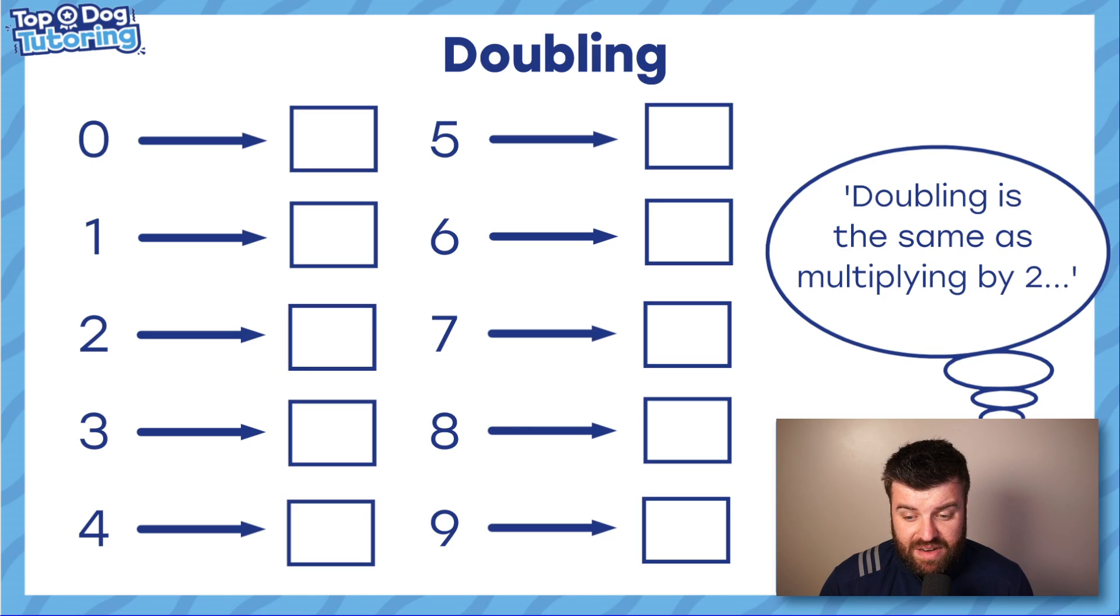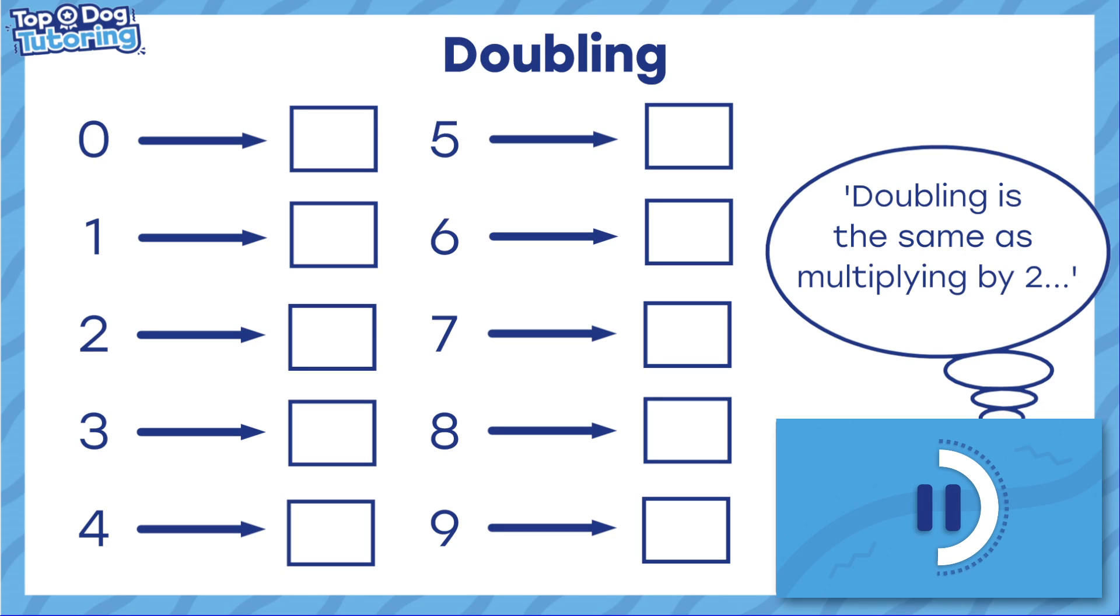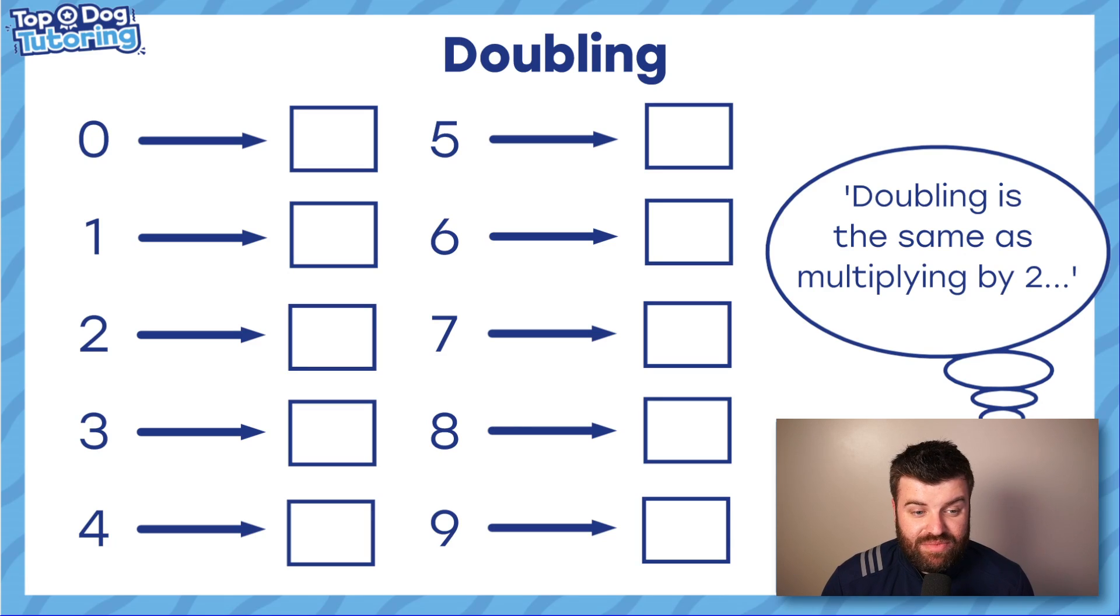So first things first, doubling. You're going to pause the video and fill in the gaps. Double those numbers for me. Now, like it says, doubling really is just the same as multiplying by two. And we need to know these doubles. Zero doubled is still zero, zero, two, four, six, eight. You notice every single answer, it's going to get us to an even number. And we are essentially just counting up in twos, guys. You need to know these. I promise you it's really, really, really useful.